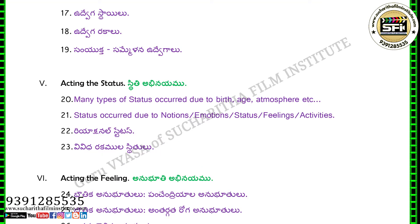Chapter 5: Acting the Status. Many types of status occur due to birth, age, atmosphere, etc. Lesson 21: Status occurred due to notions, emotions, status, feelings, activities.